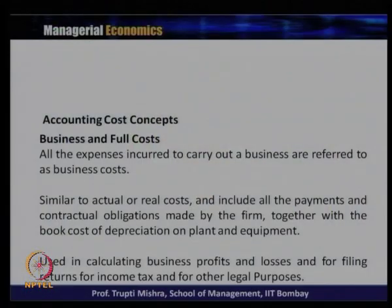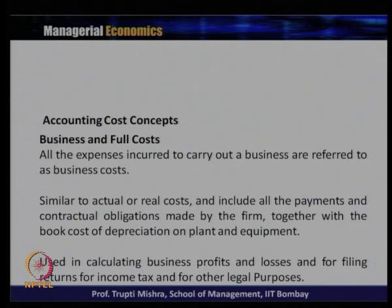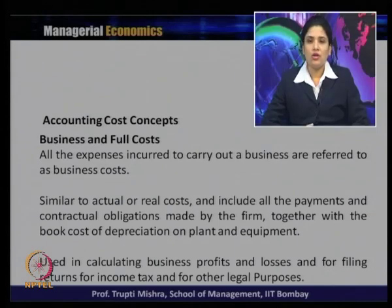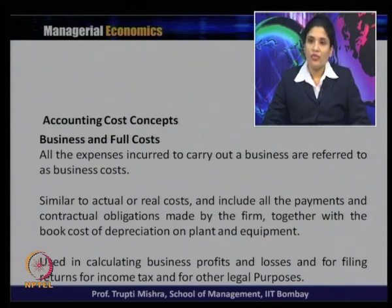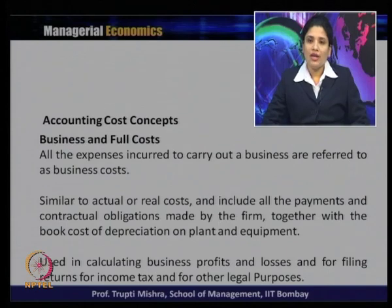The second category is business cost and full cost. All the expenses incurred to carry out the business are referred to as business cost. Typically this is nothing but the explicit cost or the actual cost. It includes all the payments and the contractual obligations made by the firm together with the book cost of depreciation on plant and equipment.